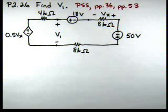Here's the problem-solving video for problem 226. If you'll note that this is a single-loop circuit and it has a dependent source, so we're going to be utilizing the problem-solving strategies on page 36 and 53. The one on 36 is for single-loop circuits. The one on 53 is for circuits with dependent sources.